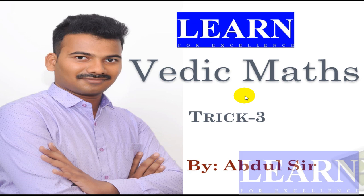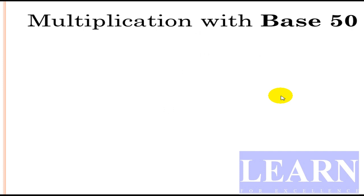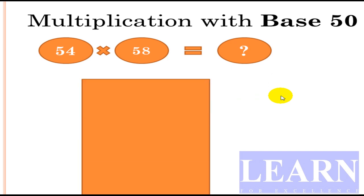Hello friends, welcome to Learn for Excellence. Today I am here with one more trick on Vedic maths: multiplying two-digit numbers with base 50. We'll look at the example multiply 54 into 58. First we'll write 54 as 54 plus 4.